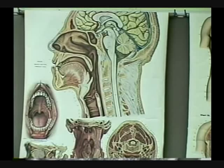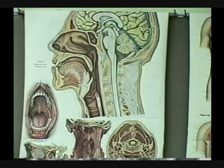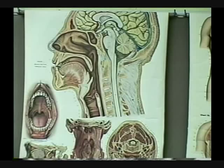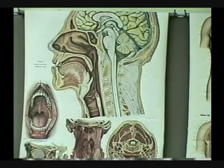What is this fold here? That's the true vocal cord. What is the space between the two true vocal cords called? The space between the two true vocal cords — glottis. Yes, good. That is the glottis. The glottis controls air going in and out. You can close the glottis and stop the air.